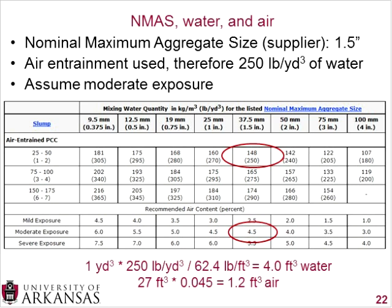Looking at one cubic yard of mix, you simply multiply by 250 pounds per cubic yard and divide by the unit weight of water, which is 62.4 pounds per cubic foot, and you find we need 4 cubic feet of water per cubic yard. One cubic yard equals 27 cubic feet. Using four and a half percent air, you multiply by 27 cubic feet and find we need 1.2 cubic feet of air. So we now have our water and air content.